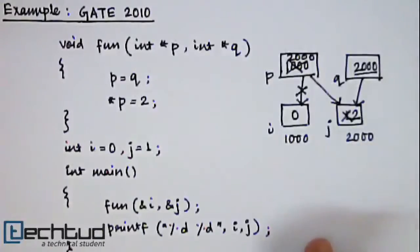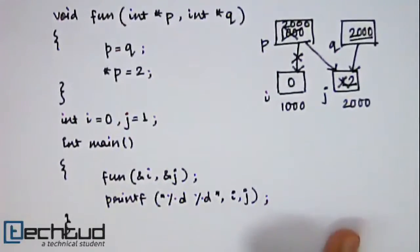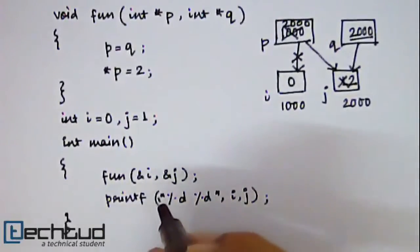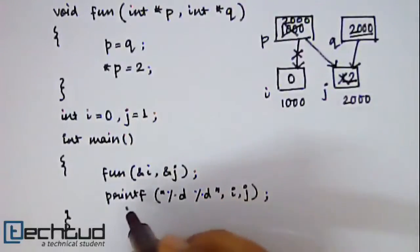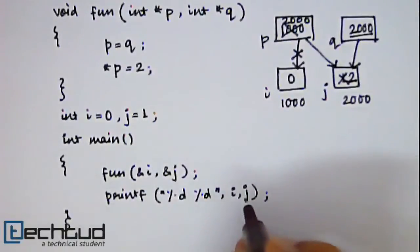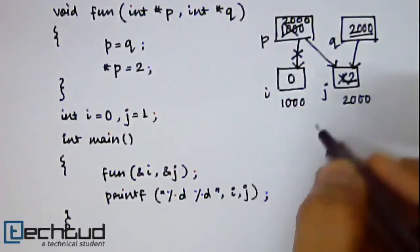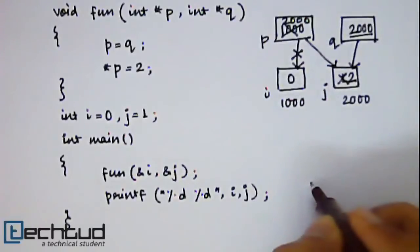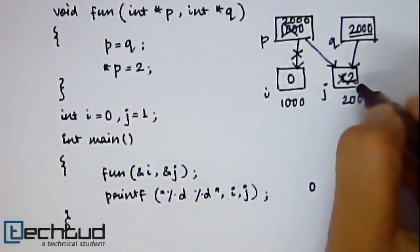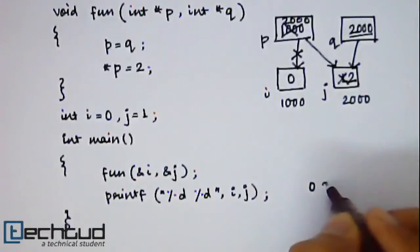Right, so now come back to the main function after the calling of fun function. You are printing the value of i and j. The question asked was what will be the output of this program. So you can see that value of i is still 0 and value of j has been changed to 2.